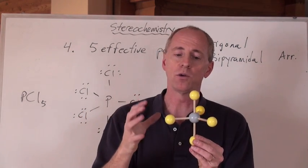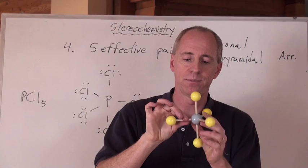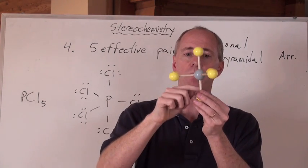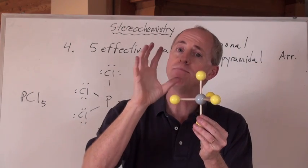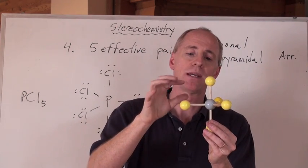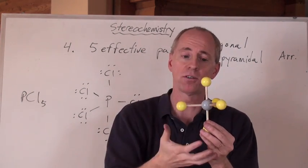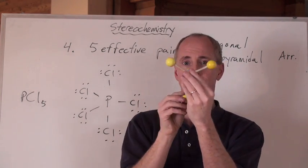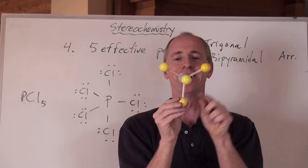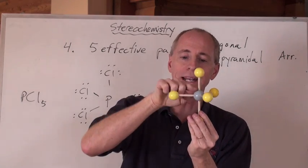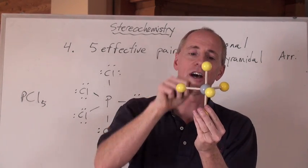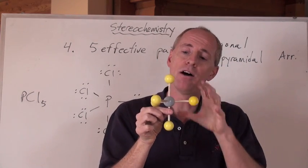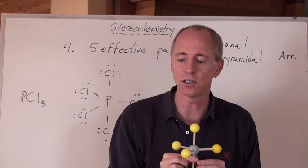But where are the five arranged? Here's how it goes: you put three of the bonds in the plane, one sticking out of the top and one out of the bottom, which actually minimizes the repulsions for at least three of the five by putting them 120 degrees away from each other. These guys are 90 degrees away from three, but they are at least 180 degrees away from each other.